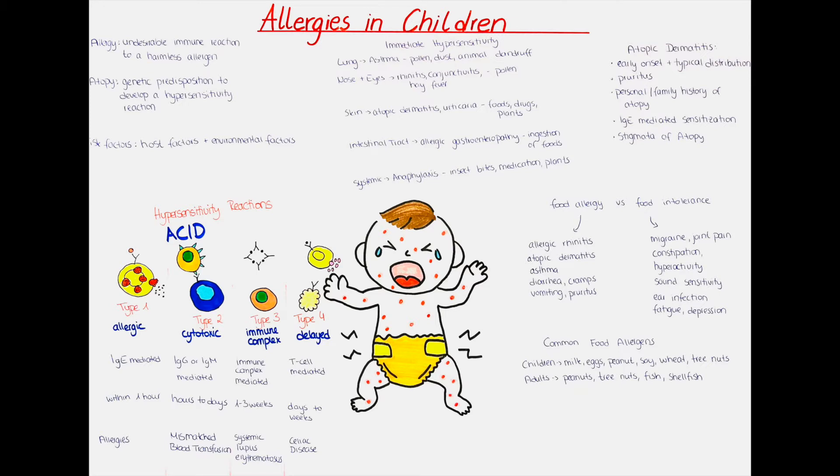Allergy is a type of hypersensitivity reaction of the immune system, so a reaction that is greater than it usually should be. Allergies can involve more than one type of reaction and are targeted against antigens that don't usually pose a threat to the body.